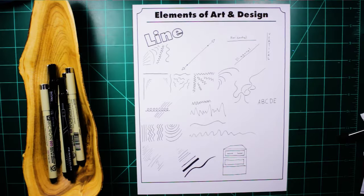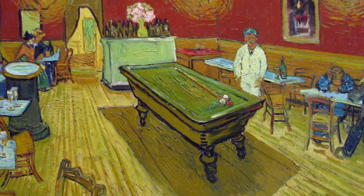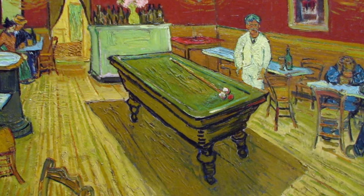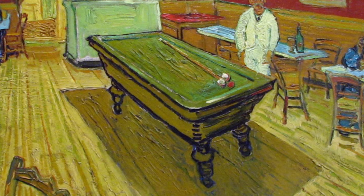Line is considered to be the simplest element because it's often the first that artists learn about when learning to draw. Like you see in this Van Gogh painting, most artists start their work by drawing the outlines and contours of the objects within their image.